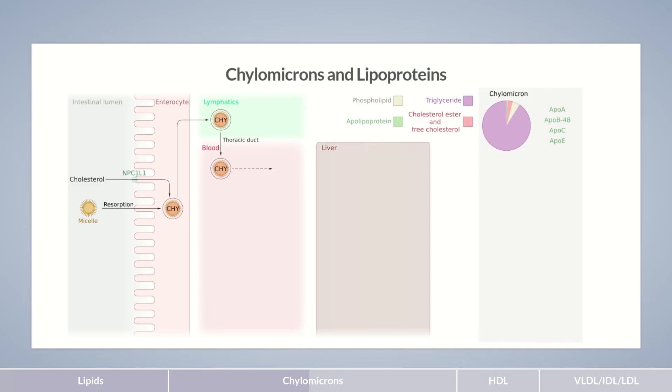Initially, chylomicrons contain the apolipoproteins A, B48, C, and E. Although the apolipoprotein names appear rather systematic, they have a purely historical basis. Unfortunately, they don't provide much information on their occurrence, structure, or function. While the lipoproteins circulate in the blood, they gradually release lipids that are eventually absorbed by the body's tissues and exchange apolipoproteins with one another. The lipoprotein composition is therefore changing constantly.